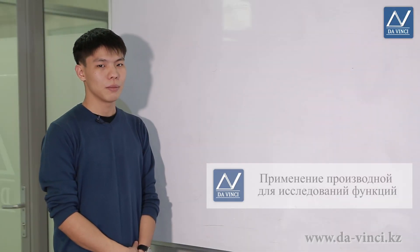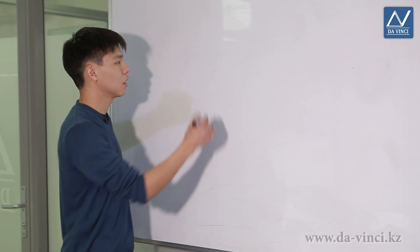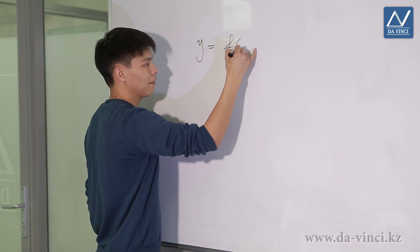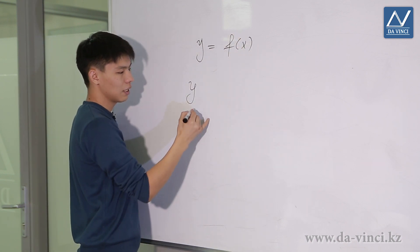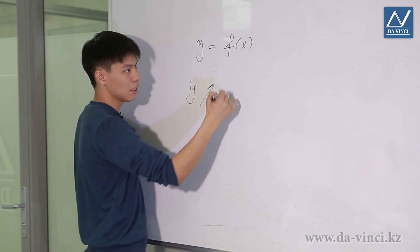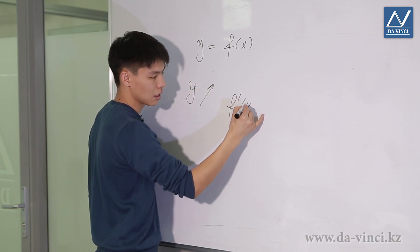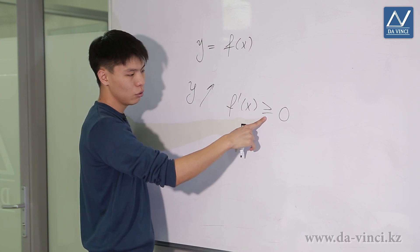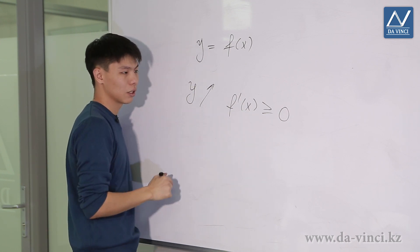The topic of this video lesson is using derivatives to study functions. The first property we study with the help of the derivative is monotony. Given a function y = f(x), the function y will be increasing if the value of its derivative f'(x) is greater than or equal to 0. Moreover, equality to 0 can be achieved only at individual points and not on the entire interval.